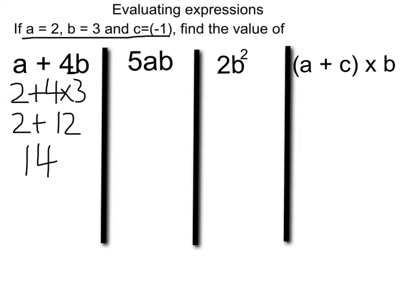Second question, 5ab. As I said before, there's no signs between the a, the b, and the 5, but they're all multiplies. So this becomes 5 multiplied by a multiplied by b. Substitute in our numbers: 5 times 2 times 3, and then just do our multiplying. 5 times 2 is 10, multiply that by 3, we get 30.